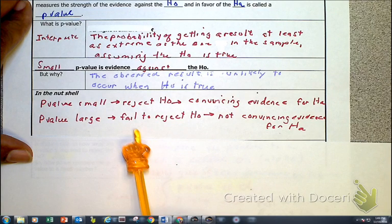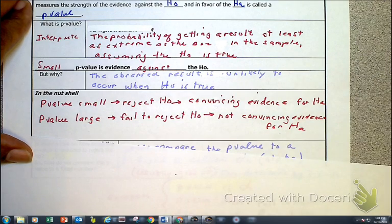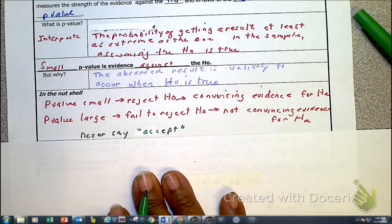When the p-value is large, we're going to fail to reject. Now this is double talk, and yes I know it's double talk, but the one thing you never do is say this: you never say support.